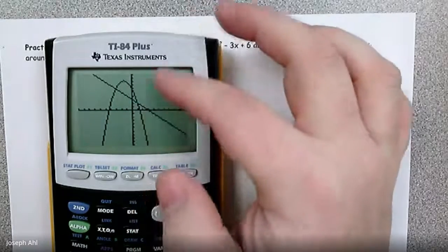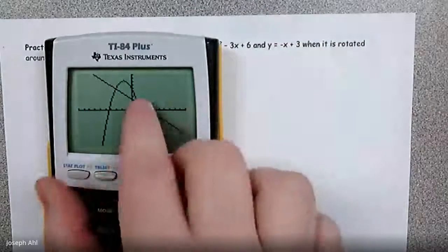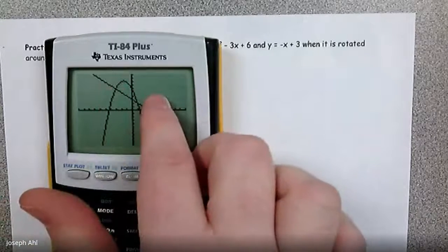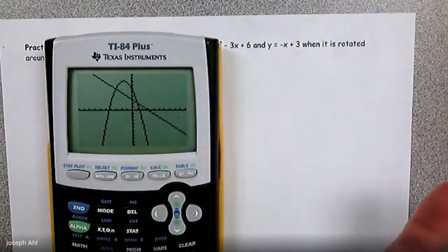which is sort of similar to rotating around the y axis, right? So you have two different approaches. If we're taking this shaded region here and spinning it around the line x equals 3, you can treat this as shell or a washer again.